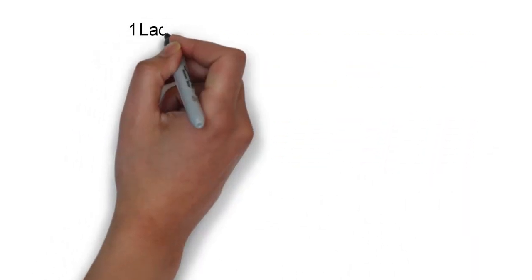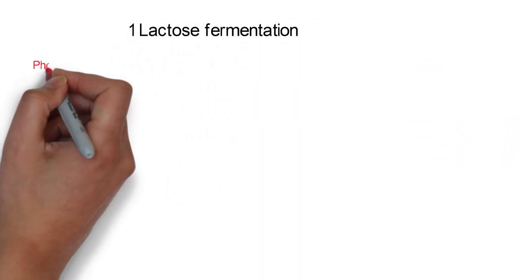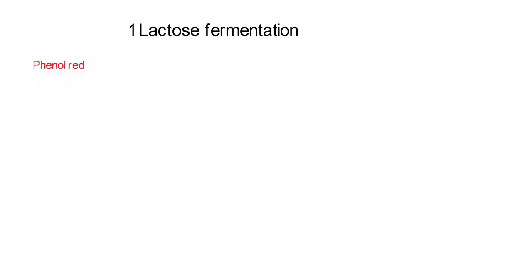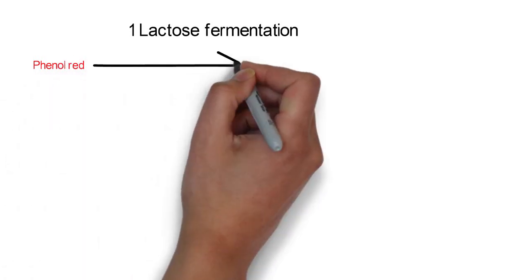Lactose fermentation is detected by the phenol red, which gives yellow colonies when acid is produced.